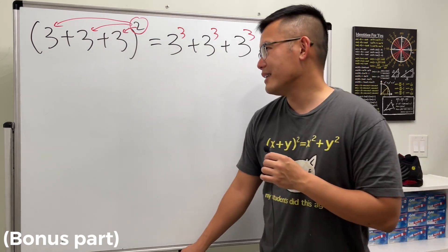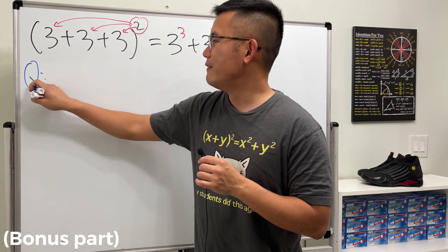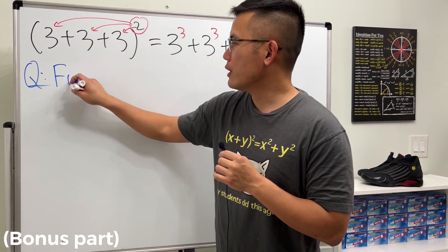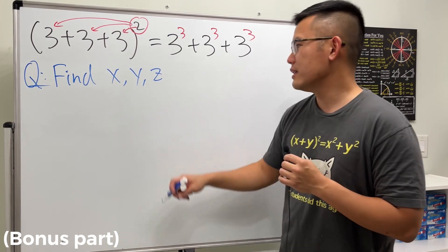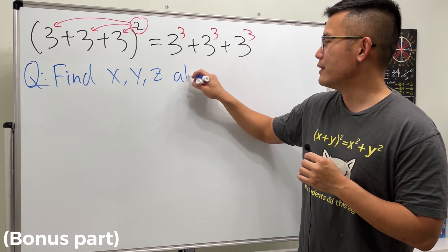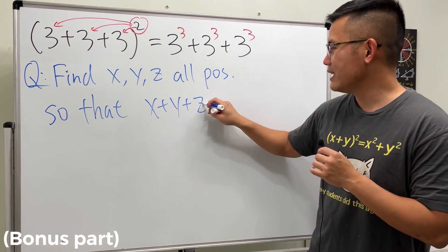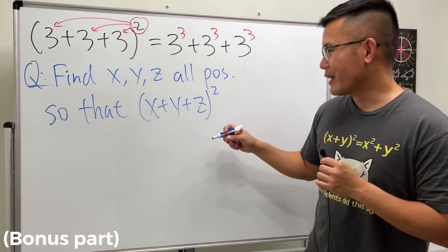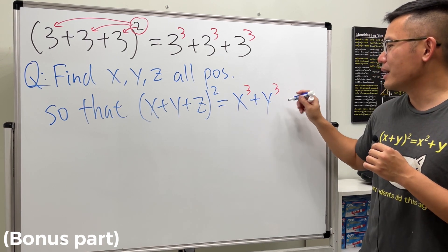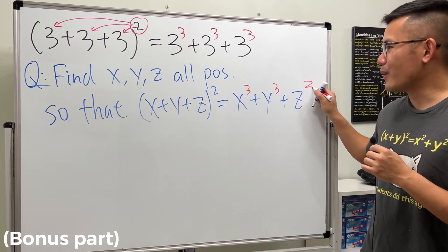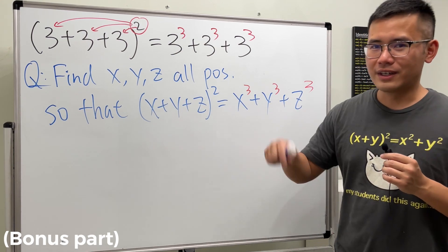Okay, I know this right here is in fact just a pure coincidence, but it's so cool though. But we can make this into a very nice math question. Is it possible for us to find, let's say, x, y, z—and of course to make them interesting, let's say all positive—so that if we have (x+y+z)², this right here somehow ends up to be x³ + y³ + z³? Go ahead and try this. If you have any other combinations, leave a comment down below. Let us know.